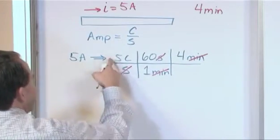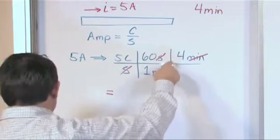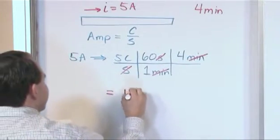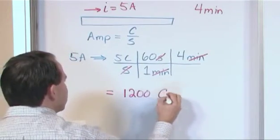So when we set that up, 5 times 60 divided by 1 multiplied by 4, we're going to get 1200. 1200 coulombs pass.